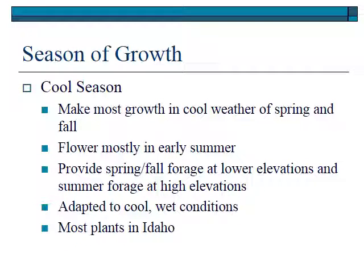Season of growth is really important — when does the plant make the majority of its growth? Cool season plants grow mostly in the spring and in the fall. Kentucky bluegrass is a good example — it grows very early in spring and then greens up again in fall. Elk sedge is also one of the first green plants in Idaho in the spring. These plants flower mostly in early summer and provide really important fall and spring forage, especially at higher elevations. They're adapted to cool and wet conditions due to their photosynthetic pathway. Idaho is a pretty cool place climatically, so almost all of our plants are cool season.